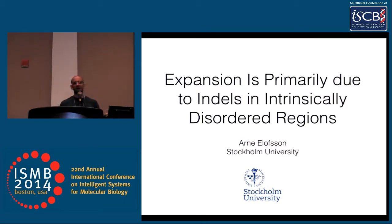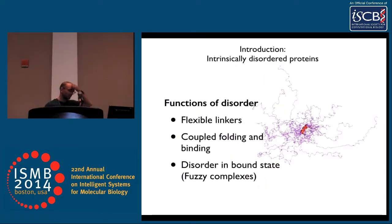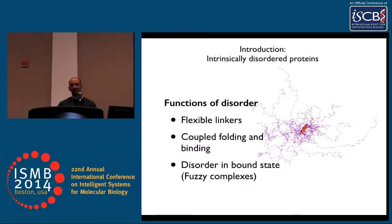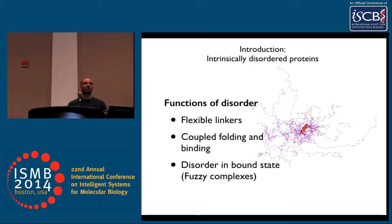I will give you a short background. Disorder regions were discovered about 15 years ago, and it's clear that quite a large part of proteins are not in an ordered folded state — at least not all the time. They could be flexible linkers, fold when they bind something, or be disordered all the time. This was overlooked for a long time, but it's a quite significant proportion of eukaryotic proteomes that are disordered.